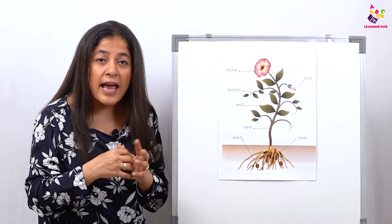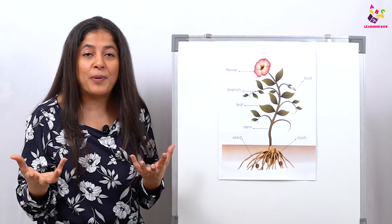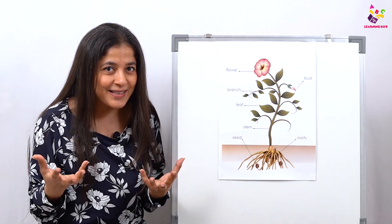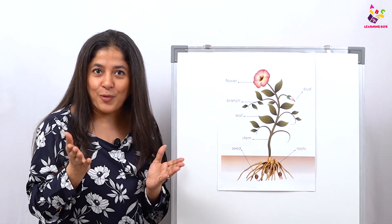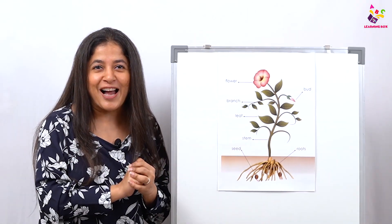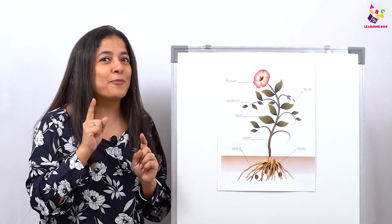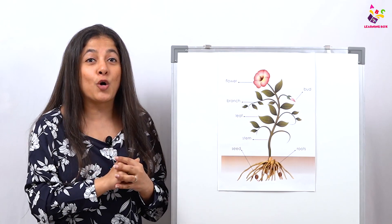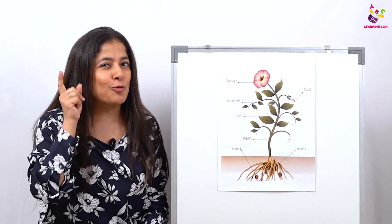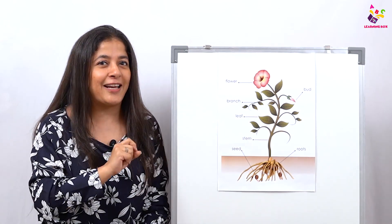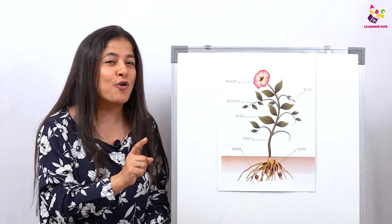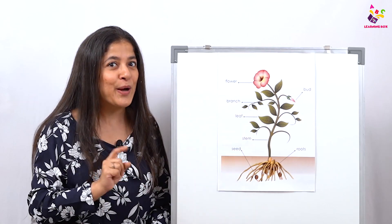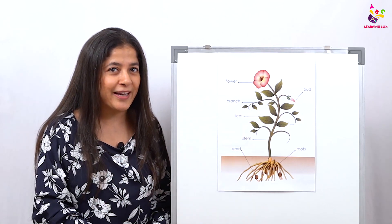Just the way flowers have pollen, fruits have seeds — and that's why they are fruits. So flowers and fruits help new plants to grow. And now I'm going to give you all a quick quiz to understand if you all know the parts of a plant properly!